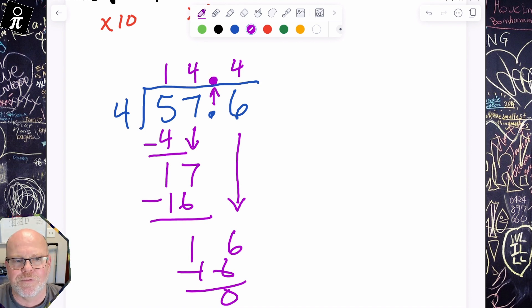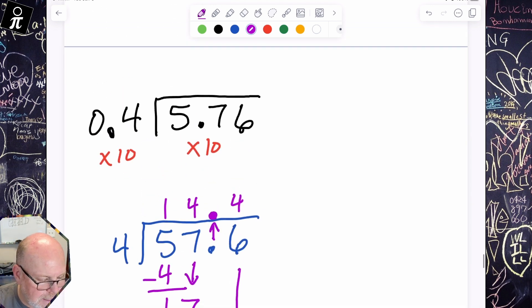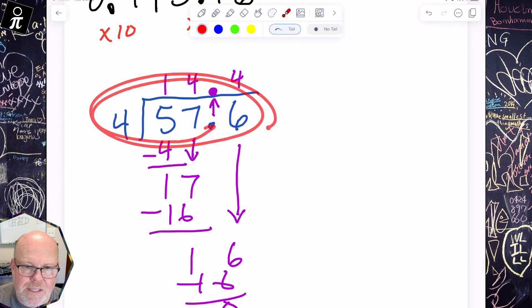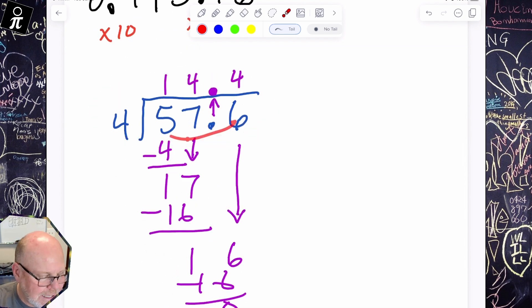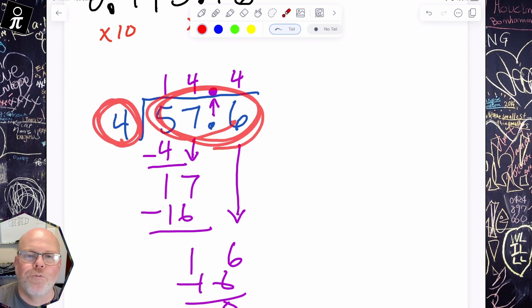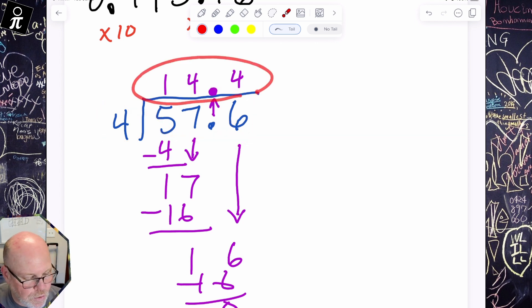The point, folks, is to recognize that dividing by a decimal means we're trying to cut something, in this case 5.76, into a non-integer number of parts. And that doesn't make sense. So, we're going to multiply both numbers by something, in this case 10, to make the problem make sense. We can cut 57.6 into 4 equal groups, and we know that each group ends up being 14.4.